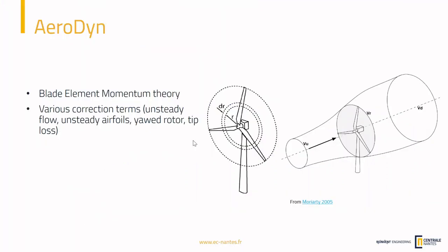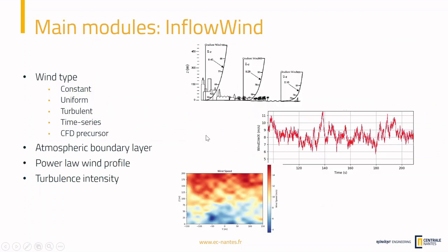Now let's look at the incoming wind. We need to provide OpenFast with information about the incoming wind using the InflowWind module. Here we can specify different types of wind: constant wind, uniform wind that can vary over time, turbulent wind, pre-computed time series, or a CFD precursor. For now we will use a constant wind. The only specification is that the wind undergoes the atmospheric boundary layer, meaning it is not the same at each altitude — closer to the surface the wind is slower, and the higher we go the faster it is. We specify this using a power law.